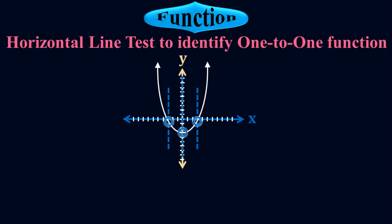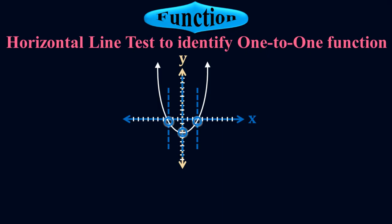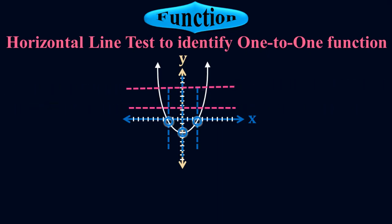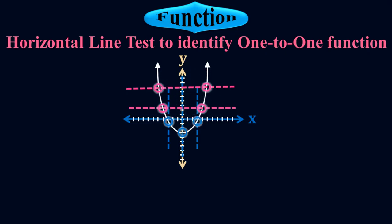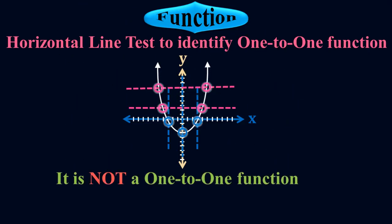Now for the one-to-one feature, I'm going to apply the horizontal line test. Let me pass the horizontal lines to the graph. Both horizontal lines touch the graph twice. Therefore it is not a one-to-one function. For the one-to-one feature, the horizontal line must pass through a single point on the graph.